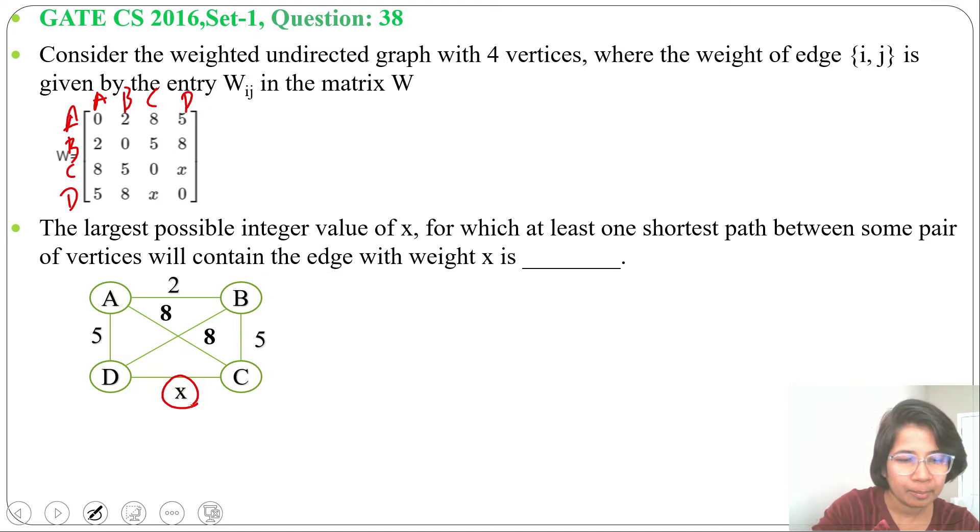Now just find path from C to D. So C to A, A to D cost is 8 plus 5, 13. Then C to B, B to D, 8 plus 5 cost is 13.